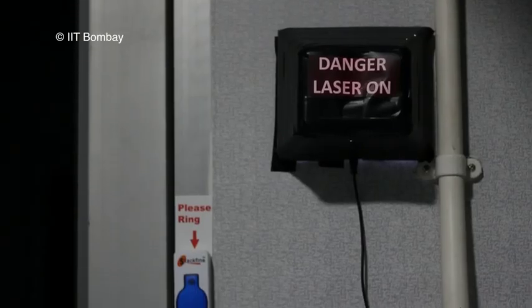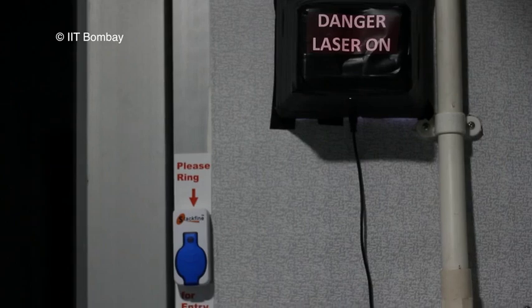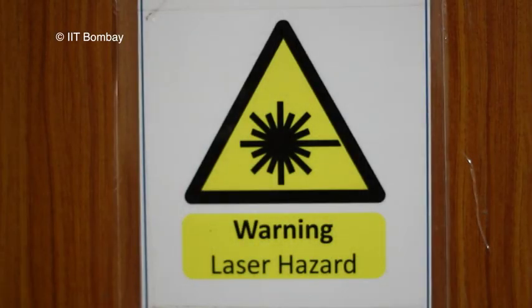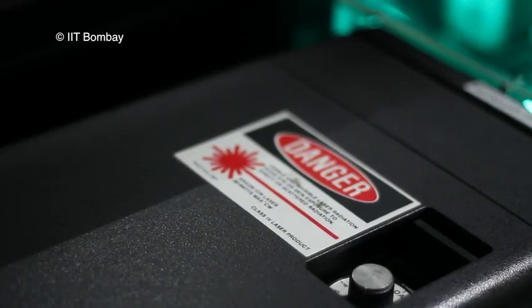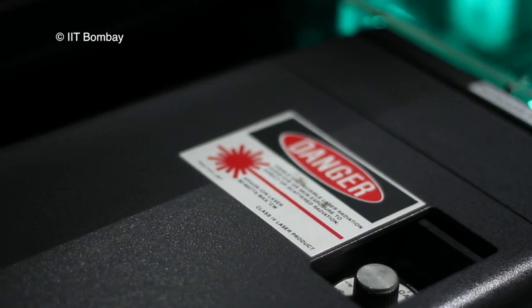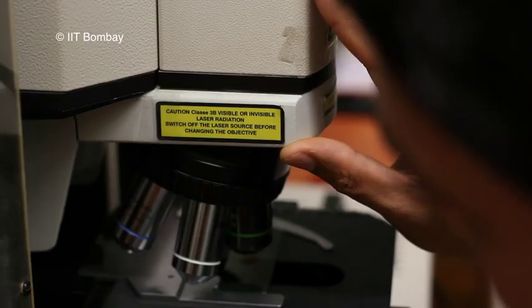Warning lights and laser signage must be displayed on the entrance of the laser rooms using Class 3B and Class 4 lasers. We will now see the safety precautions to be followed while working with lasers. Know the class of the laser before starting work with lasers. Check the label on the laser.